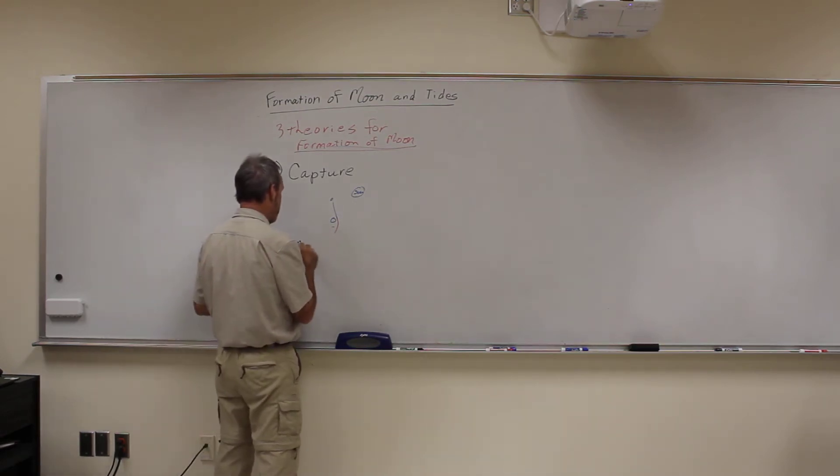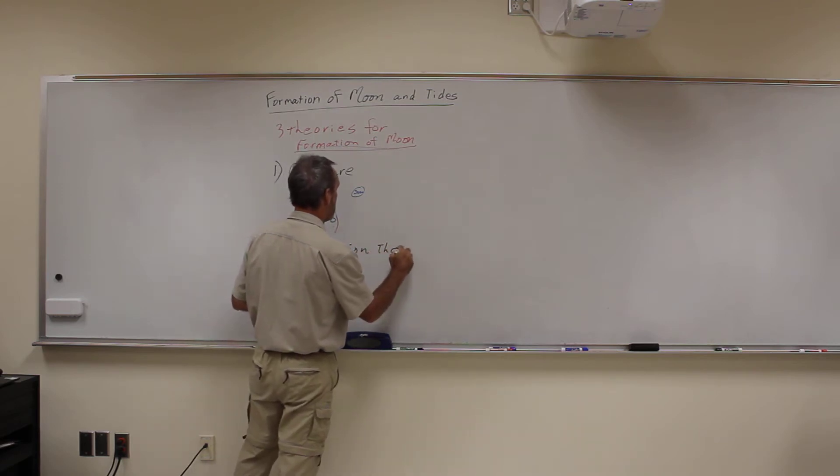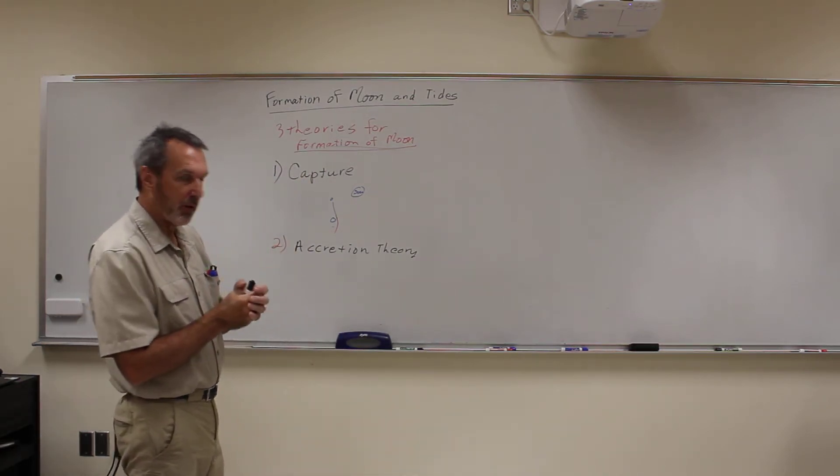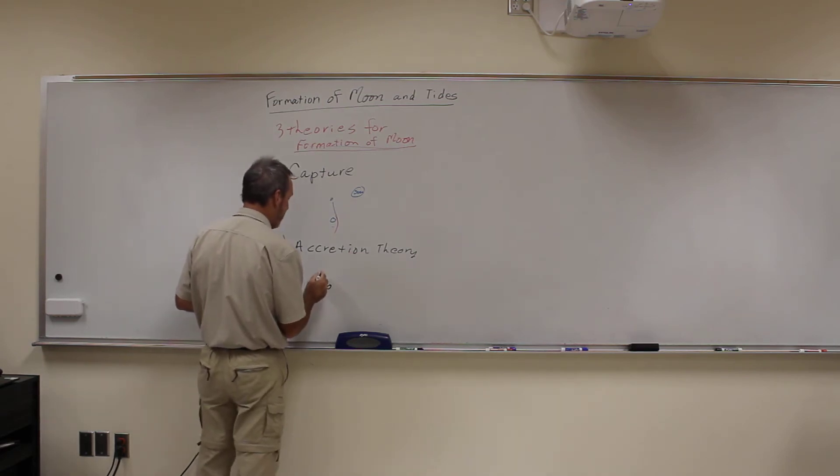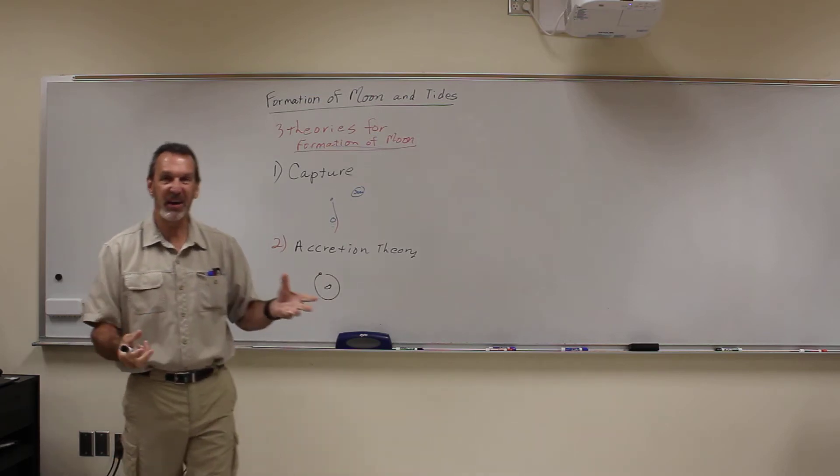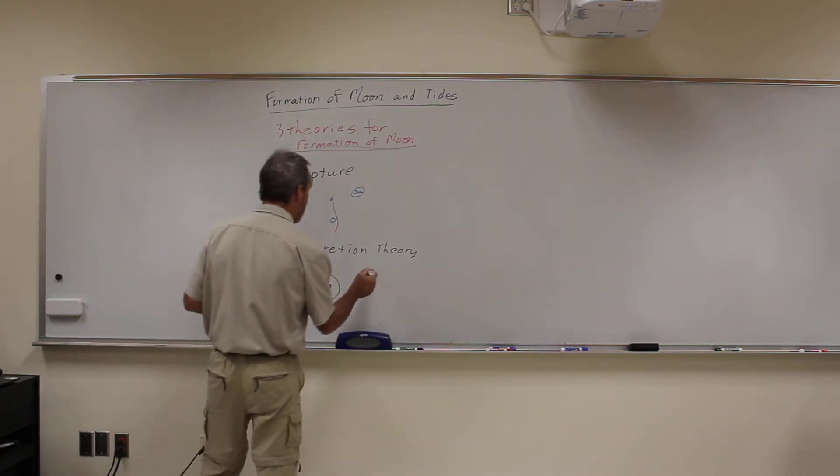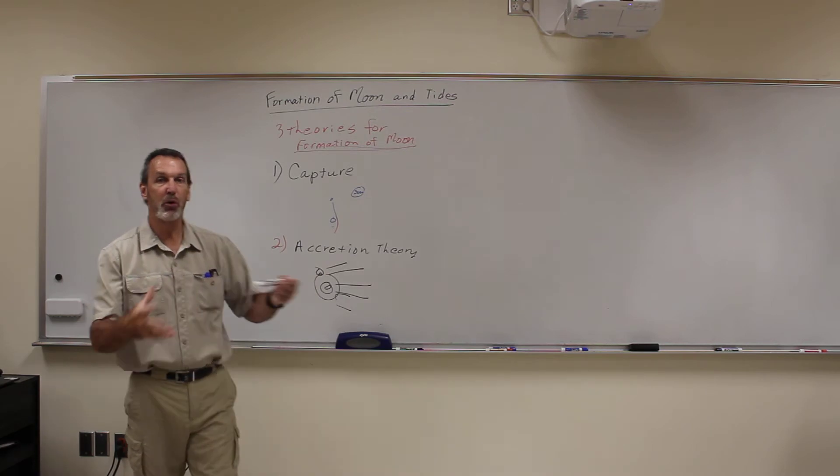The other one was what we call the accretion theory, which is how planets form. Accretion means you take smaller things and you make bigger ones because they come together. So what if earth started out as a very tiny chunk of rock with the moon going around? So they were both very tiny, only a few hundred miles across or something like that. And then all this other debris comes in and hits it, and they both get bigger. And so over time they grow together.